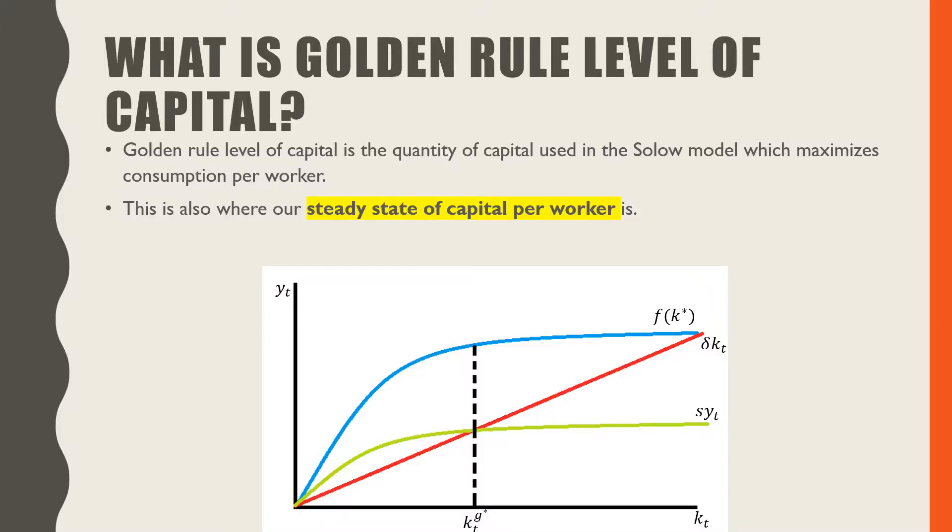What is the golden rule level of capital? Golden rule level of capital is the quantity of capital used in the Solow model which maximizes consumption per worker. This is also where our steady state of capital per worker is.